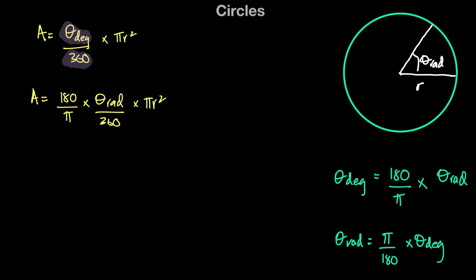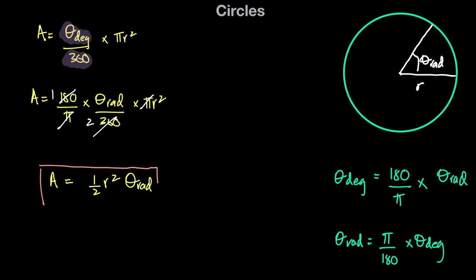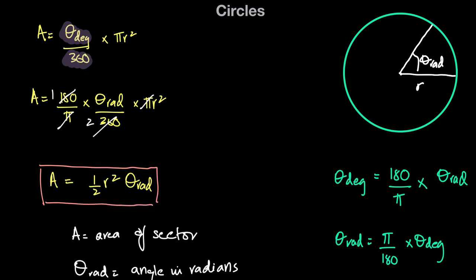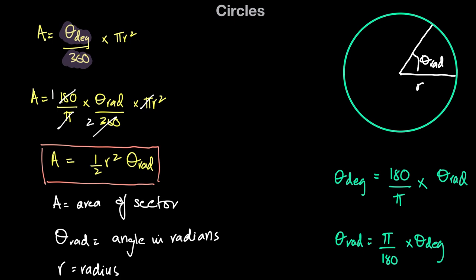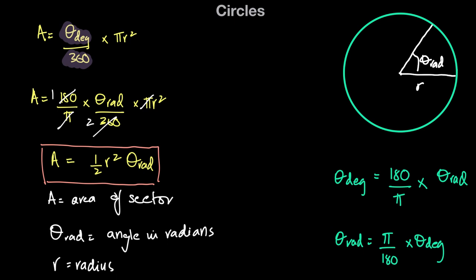So here we have an expression for the area of the sector A in terms of the angle in radians. Let's simplify. We can see that pi and pi cancel each other out, and 180 divided by 360 is just one over two. So what we get is that the area A of a sector can be written as one half times r squared times the angle theta in radians.